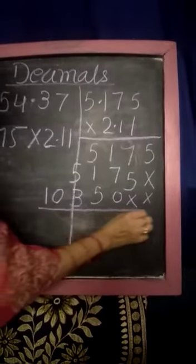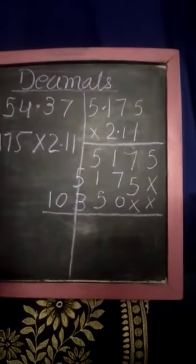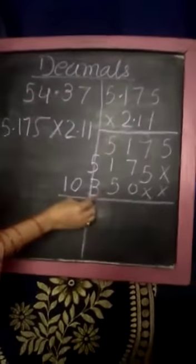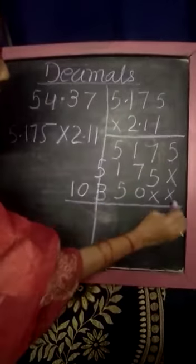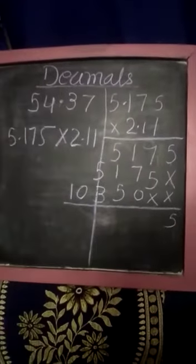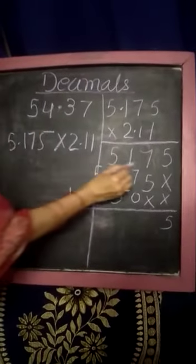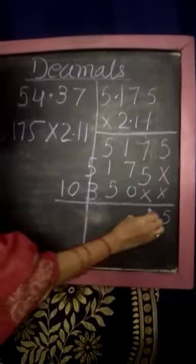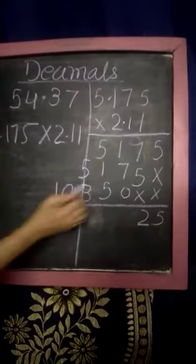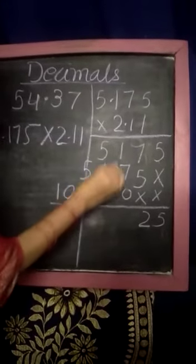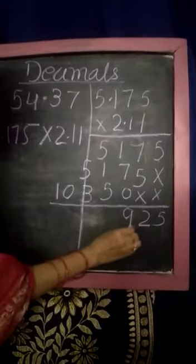Now the numbers are there. Now we have to add these numbers. 5 is there. 7, 5, 12. Now 1 is carry. 1, 7, 8. And 1 also carry, 9.